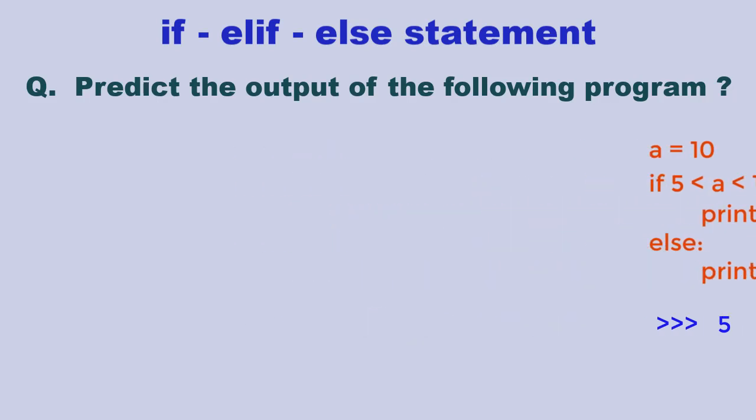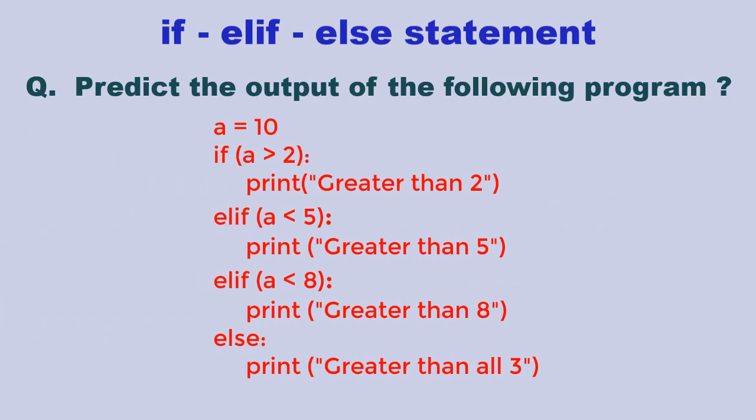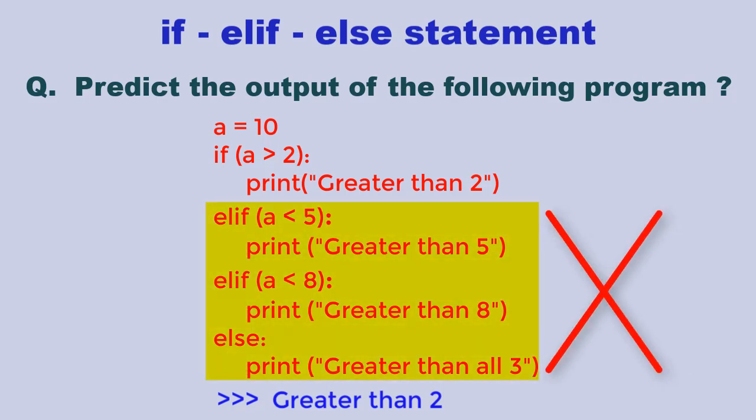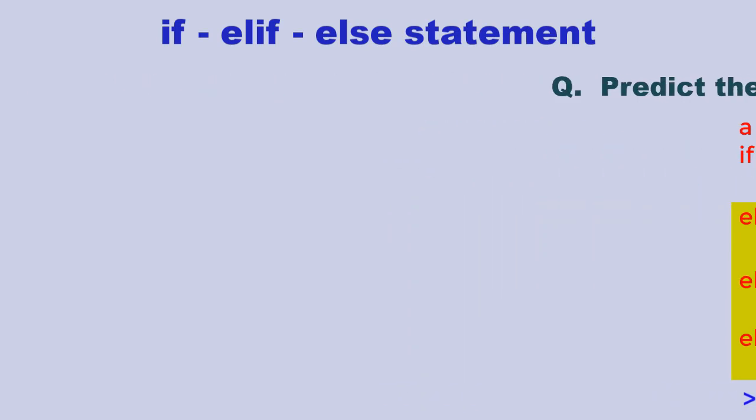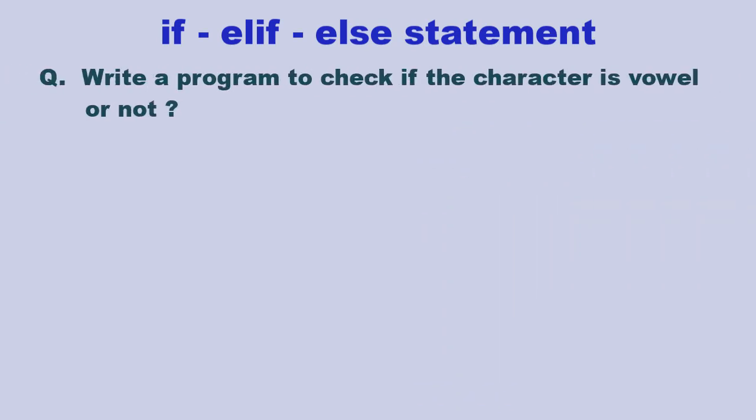Another similar question is what is the output of if-elif ladder. Here, first it will check a is greater than 2, and since it is true, it will execute and print 'greater than 2'. It will however execute only one block out of the elif ladder. It will start comparing from the top, and moment the match is found, it will ignore all other elif statements below even if they are true and exit the if block.